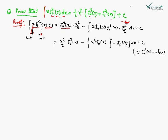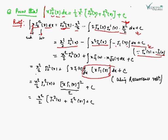Applying integration by parts: J₀²(x) · (x²/2) minus the integral of [2·J₀(x)·J₀'(x) · (x²/2)] dx, plus constant. Further, by applying the recurrence relation J₀'(x) = -J₁(x), we get (x²/2)·J₀²(x) minus the integral of x²·J₀(x)·(-J₁(x)) dx plus constant.